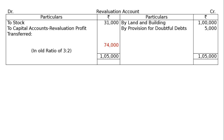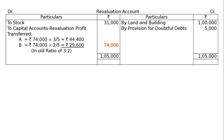Revaluation profit transferred to capital accounts in old ratio of 3 to 2: A gets Rs. 74,000 multiplied by 3/5, that is Rs. 44,400, and B gets Rs. 74,000 multiplied by 2/5, that is Rs. 29,600.